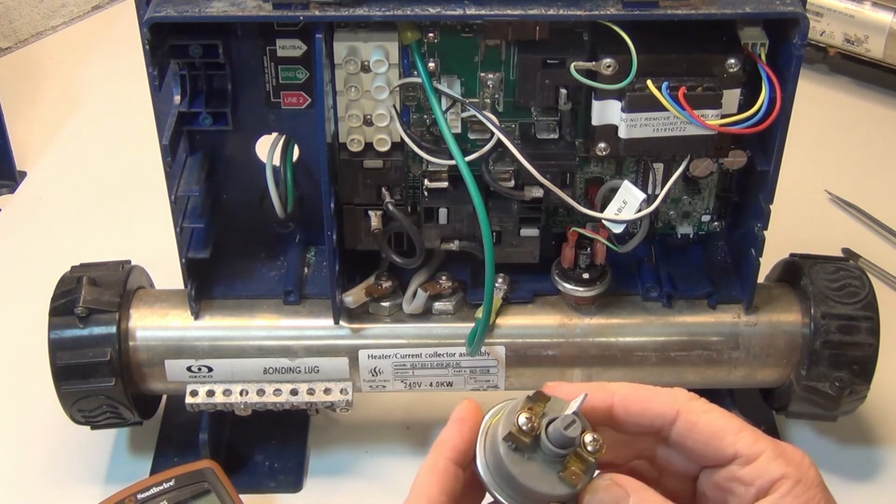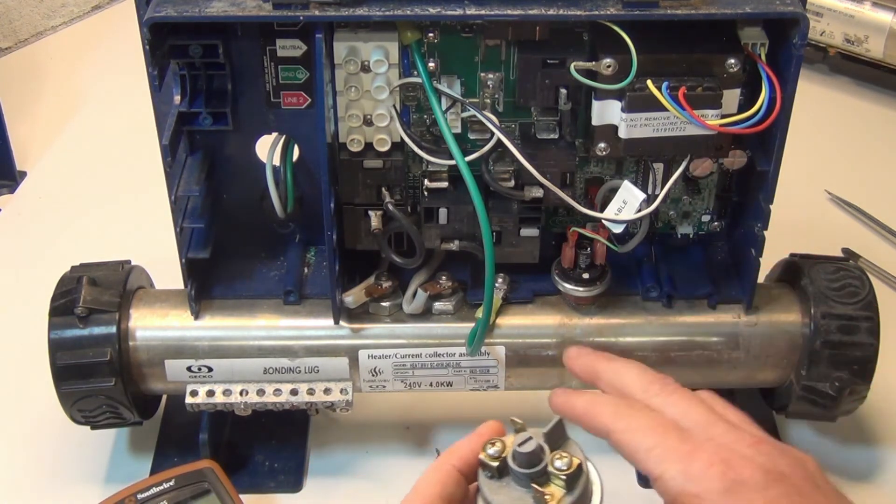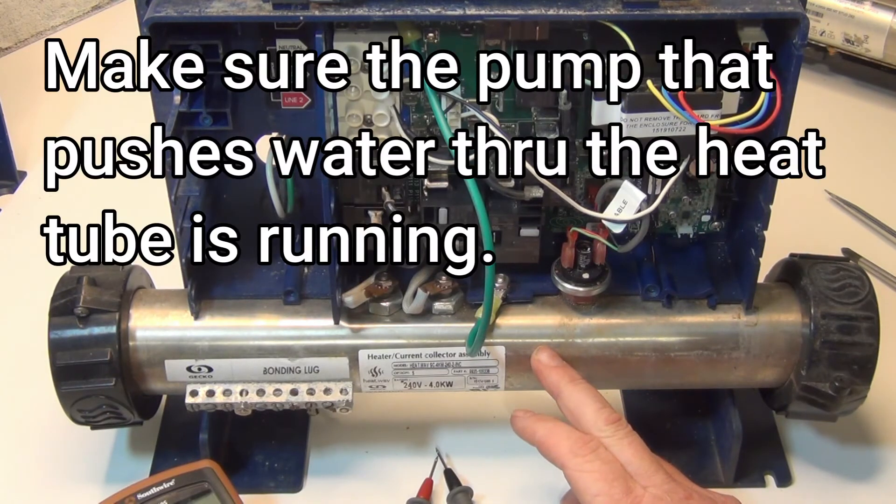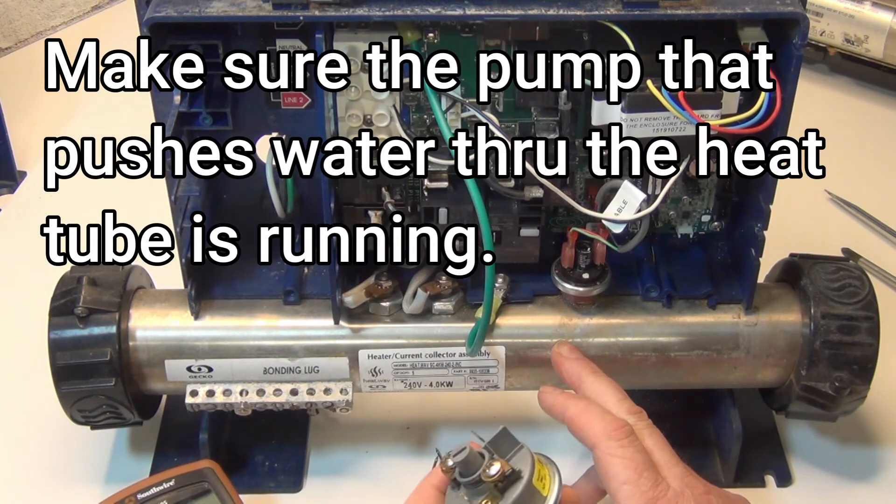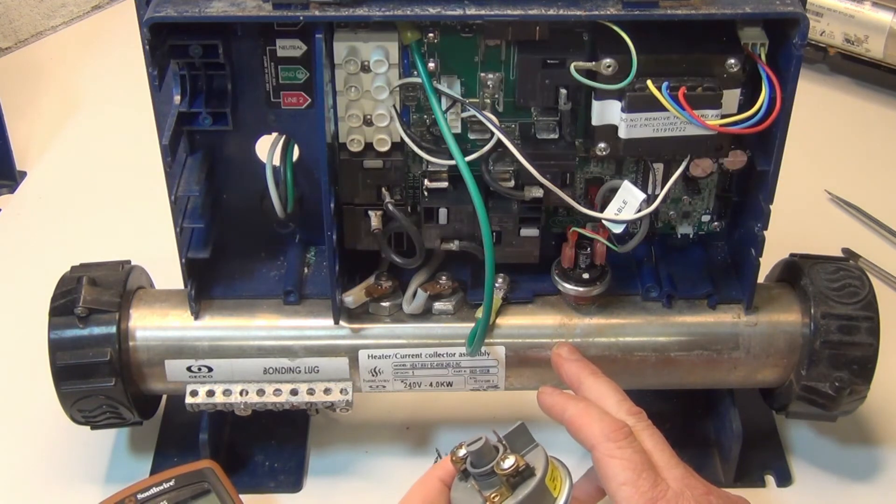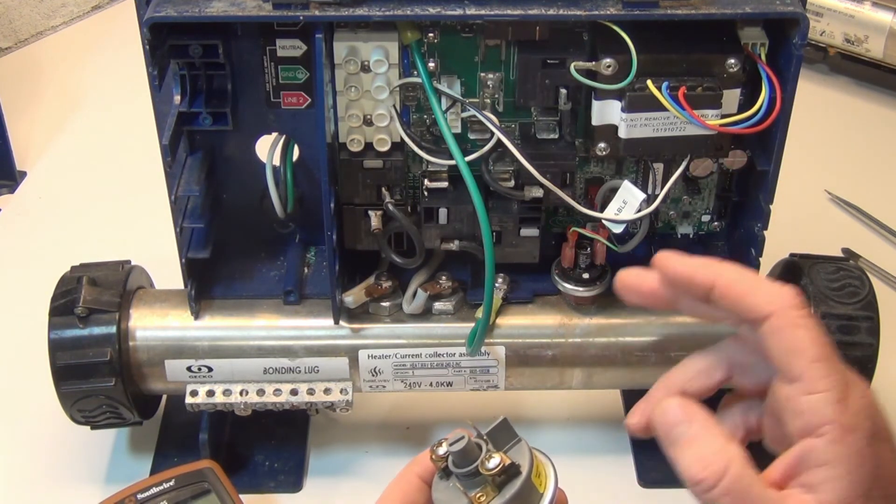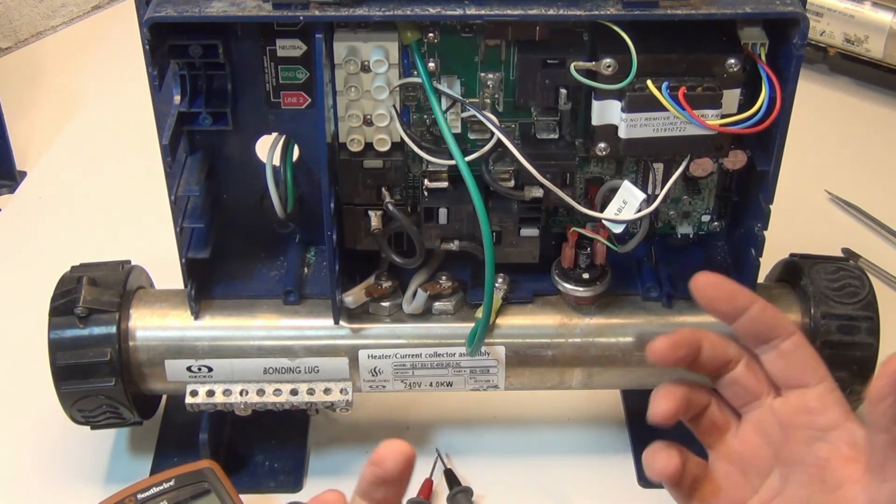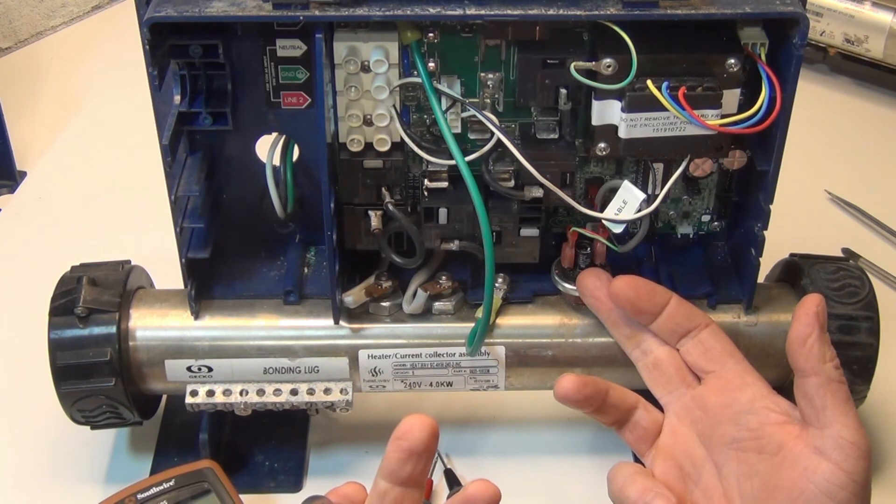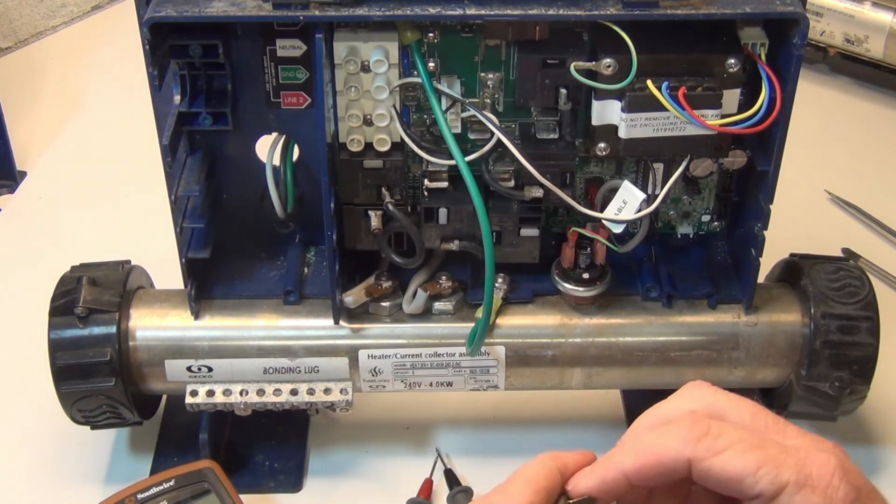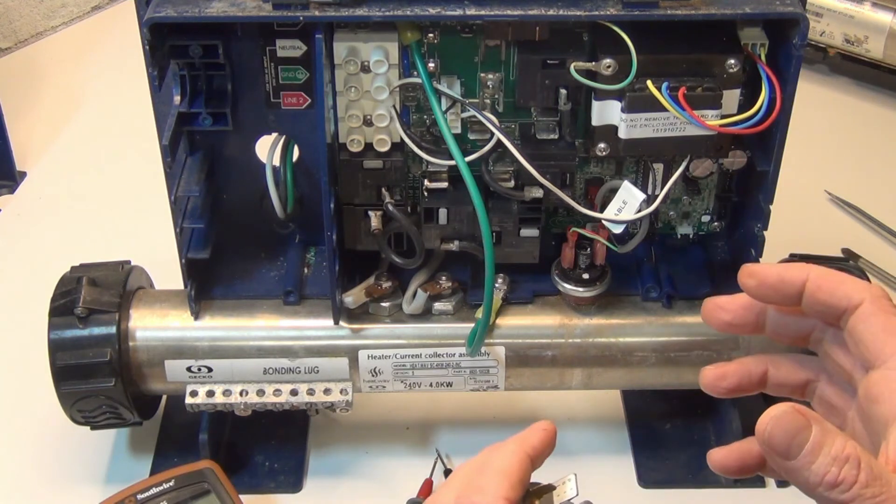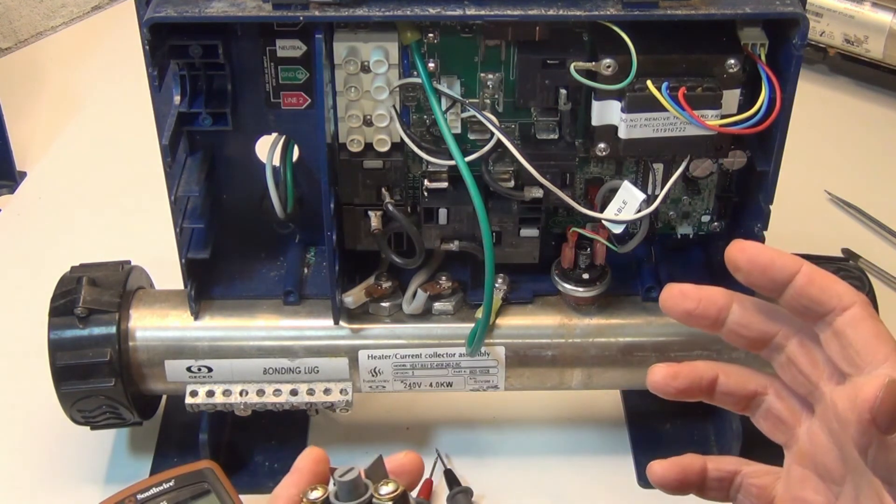You've got to make sure that whatever pump is pushing through the heat tube, the water, make sure that pump's working. If that pump's not working, it's not on. Like even if you hit low speed you might have a smaller pump, but if it's not working at all, obviously you're going to get the pressure switch is going to turn off.